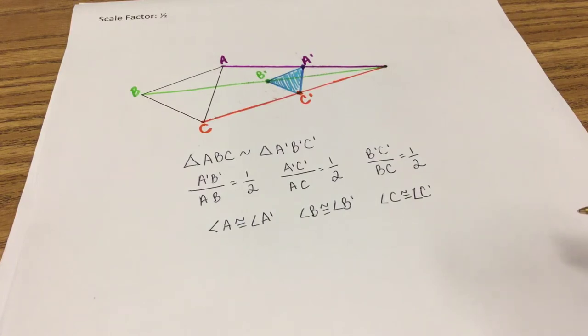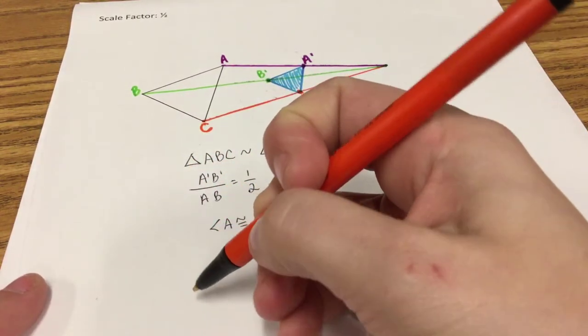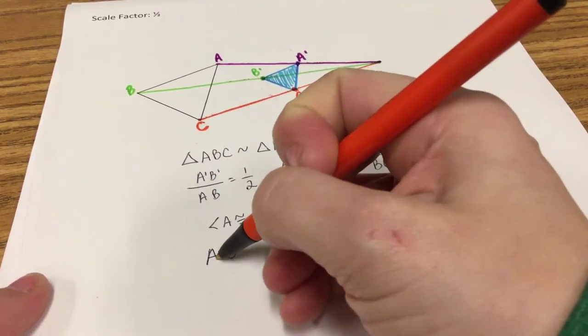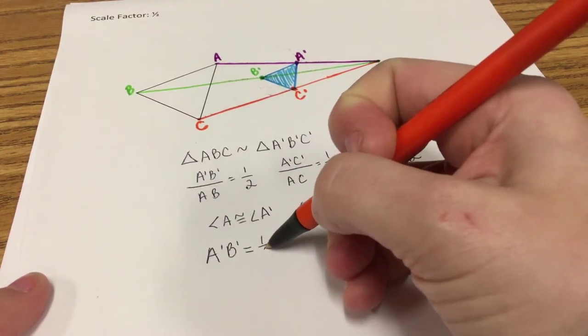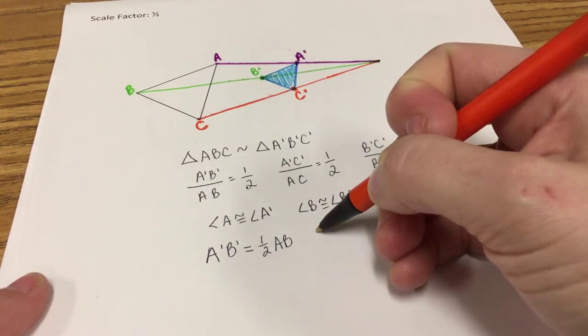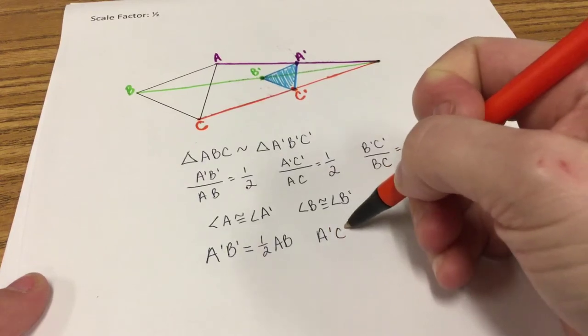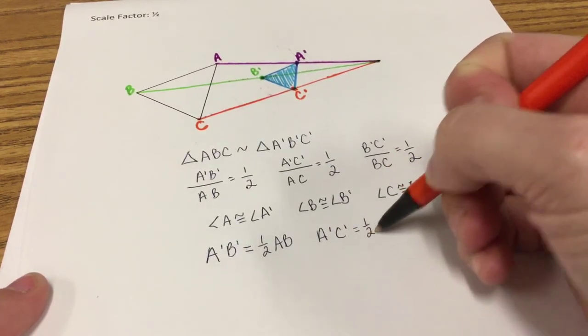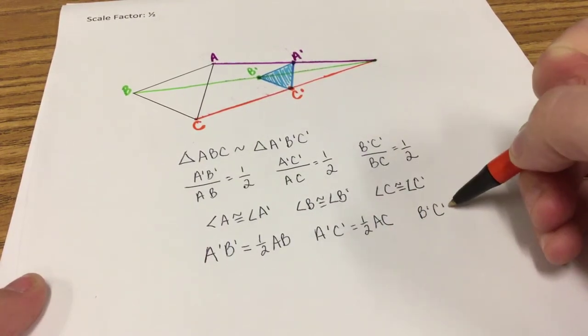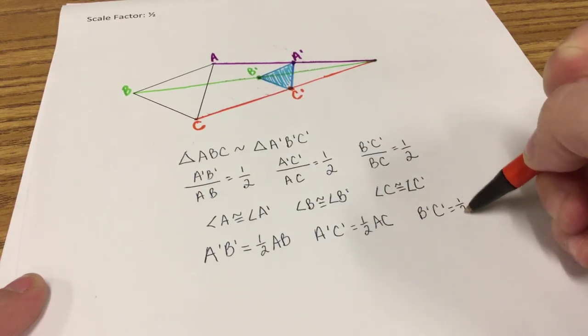So remember, our scale factor of 1 half means that the image A prime B prime C prime is half as large as the pre-image ABC. So we could write three equations to represent this. We can say A prime B prime equals 1 half AB. Repeat for each segment. A prime C prime equals 1 half AC and B prime C prime equals 1 half BC.